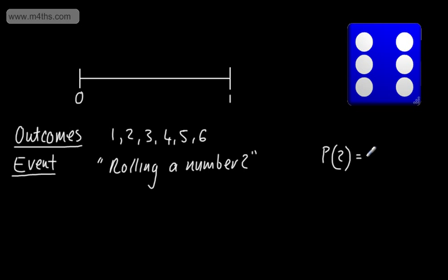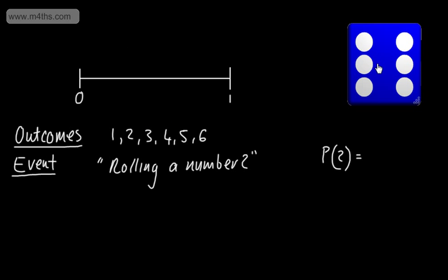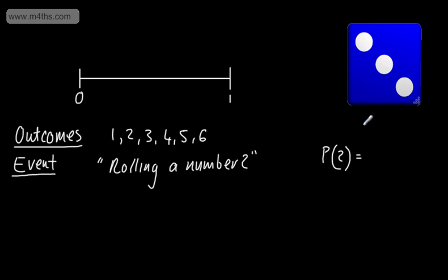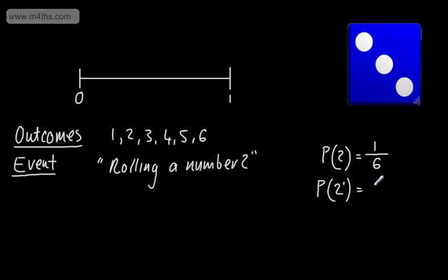With this fair six-sided dice, each of these numbers has an equally likely chance of landing. So the probability of a two will be one over six — there's only one two and there are six possible outcomes. It's the number of favourable outcomes divided by the total number of outcomes. If I wanted to find the probability of the event of it not being a two, we could add up the one, three, four, five, and six and say there's five out of six. Or, we could do one minus the probability of it being a two, which gives us one minus one-sixth, which is five-sixths.